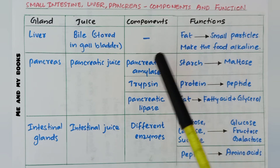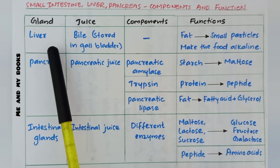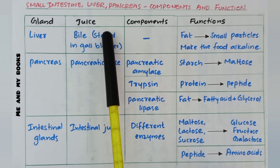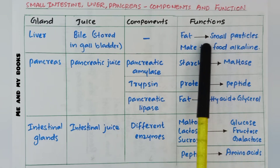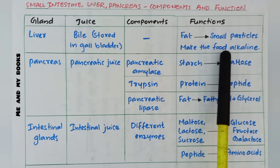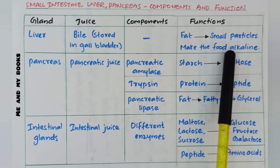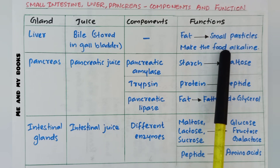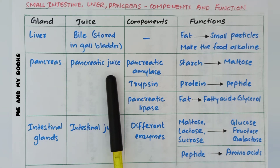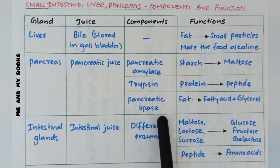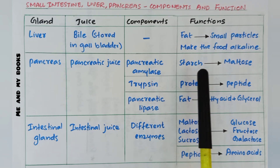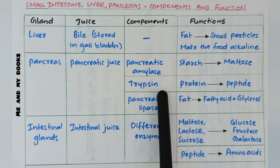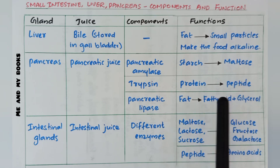How do the small intestine, liver, and pancreas help in digestion? The liver is the largest gland; its juice is bile, stored in the gallbladder. Bile converts fat into smaller particles and makes the food alkaline — neutralizing the acidity from hydrochloric acid — inside the small intestine. The pancreas produces pancreatic juice containing three enzymes: pancreatic amylase, trypsin, and pancreatic lipase.